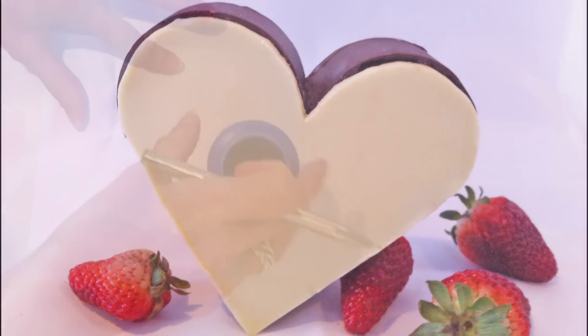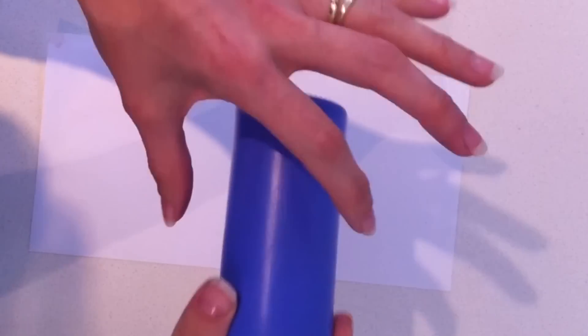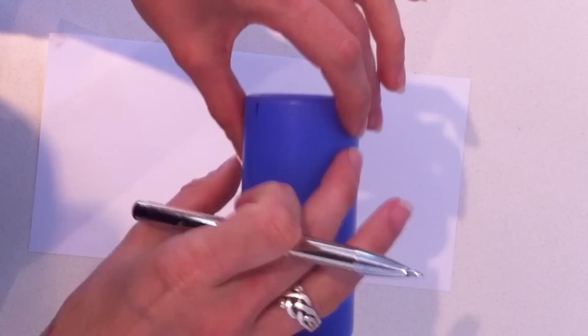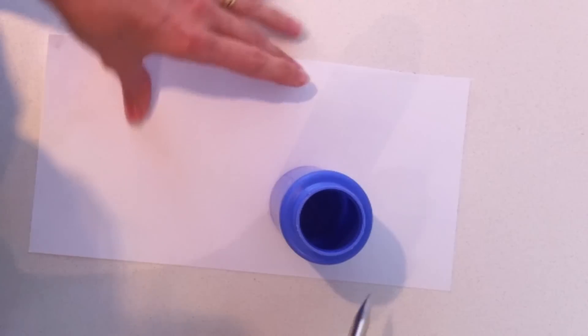To make a heart-shaped box, firstly you are going to need a container that is a cylinder shape with straight sides going up and down, and we are going to use that to draw the template of our heart.